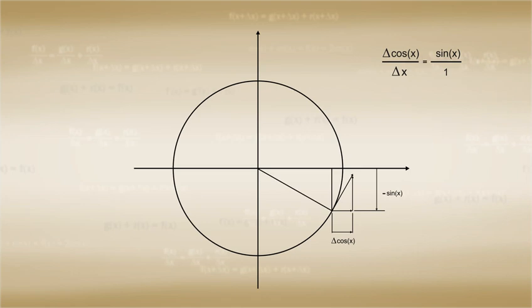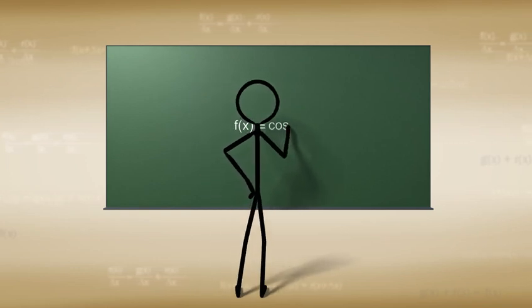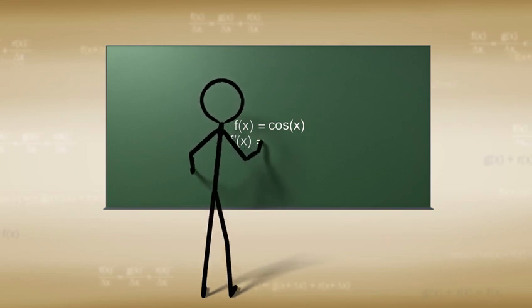Instead, we have to say that delta cosine x over delta x is equal to the negative sine of x over 1. And all of this means that if f of x is equal to the cosine x, then the derivative of f of x is equal to negative sine of x.